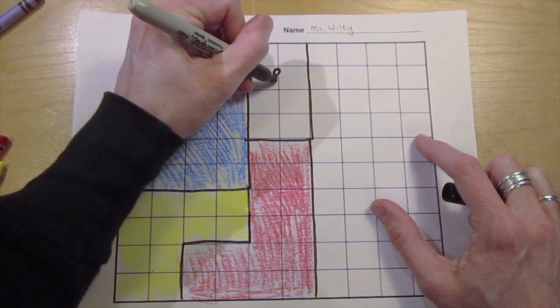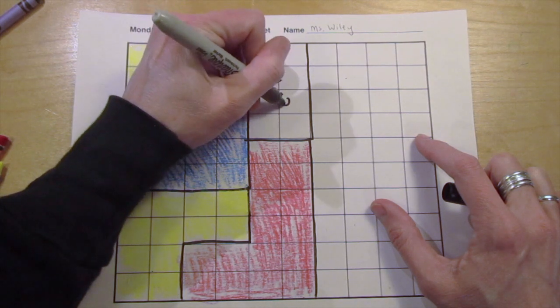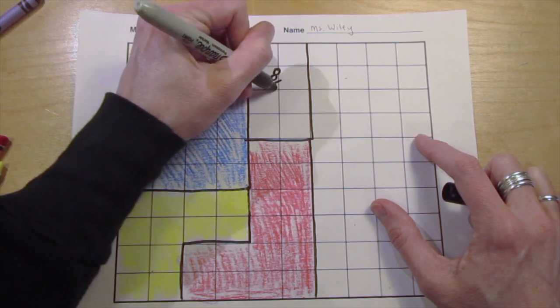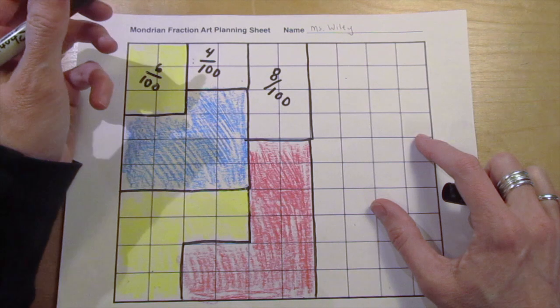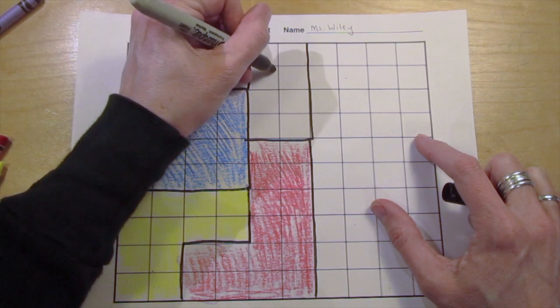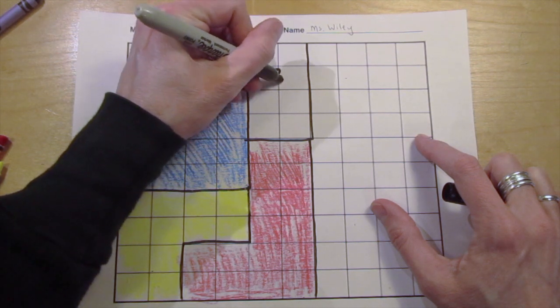For example, this section could be recorded as eight one-hundredths because it is eight parts of the whole 100 squares. You will also need to number each of your sections to keep track. So I'm going to call this section number one.